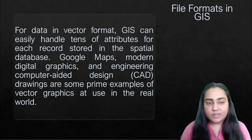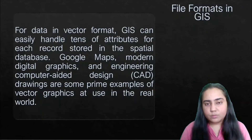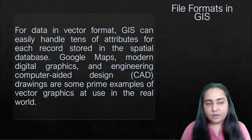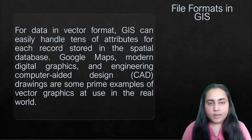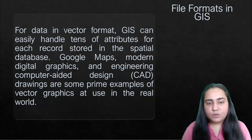For data in vector format, GIS can handle tens of attributes for each record stored in the spatial database. Google Maps, modern digital graphics, and engineering computer-aided design — popularly known as CAD drawings — are prime examples of vector graphics used in the real world today.